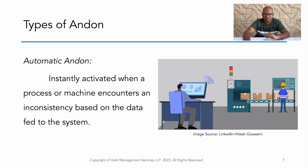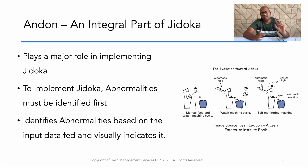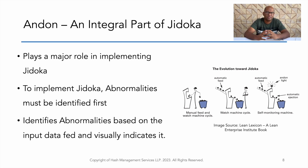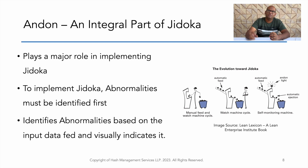Andon is a part of Jidoka. In our last video we spoke about Jidoka in detail — the link is in the corner so you can watch that too. Jidoka is automation with a human touch: the machine identifies the issue and highlights it to the user. Andon is one of the ways the machine gives signals to the user, making it an integral part of Jidoka.